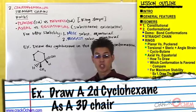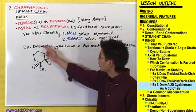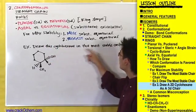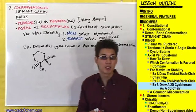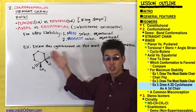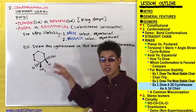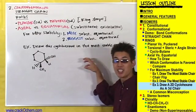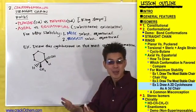In this type of question, your professor is asking you to draw this cyclohexane in the most stable conformation possible. He's giving you the 2D planar conformation and he wants you to translate this into the 3D chair conformation that's the most stable.